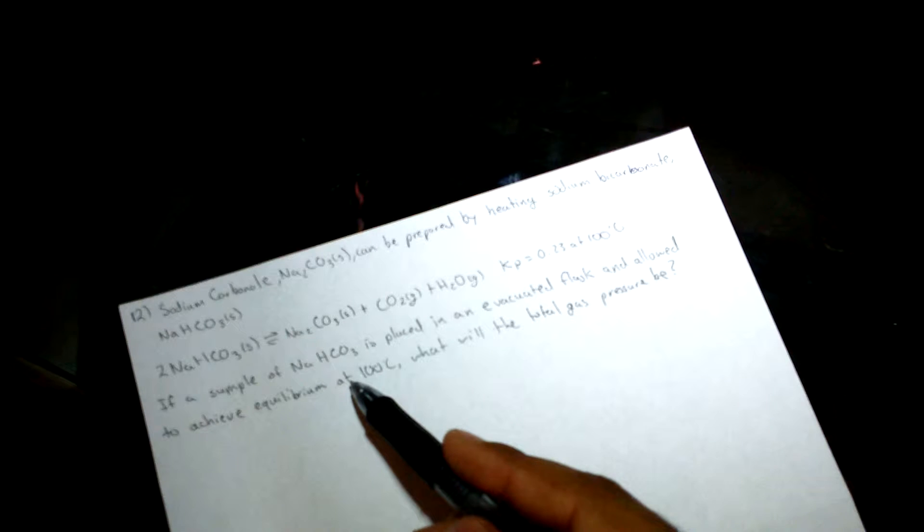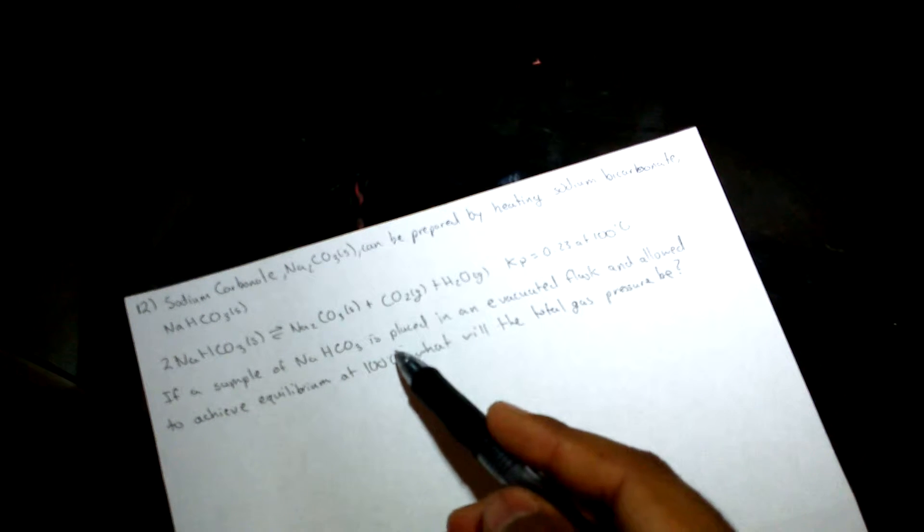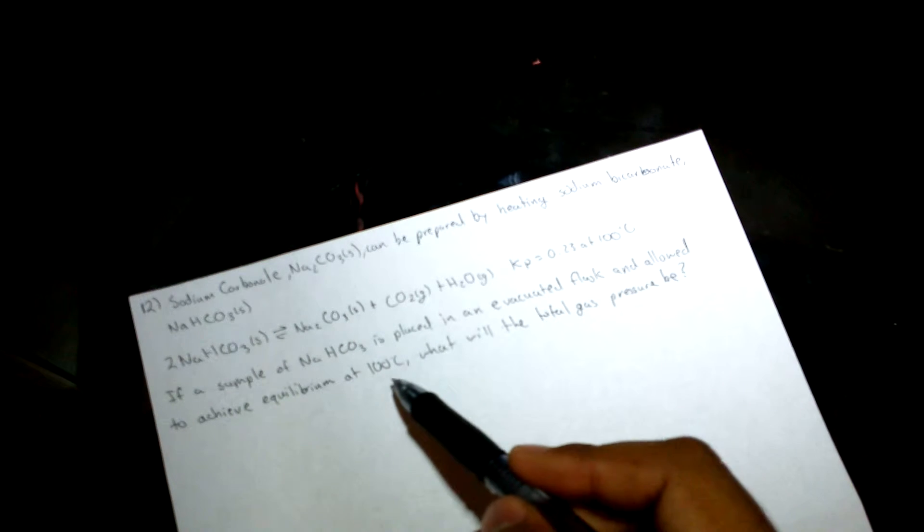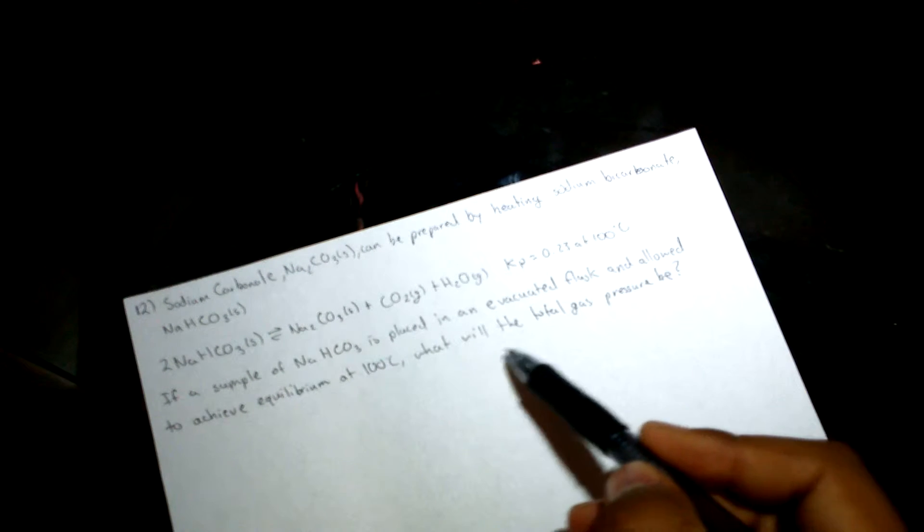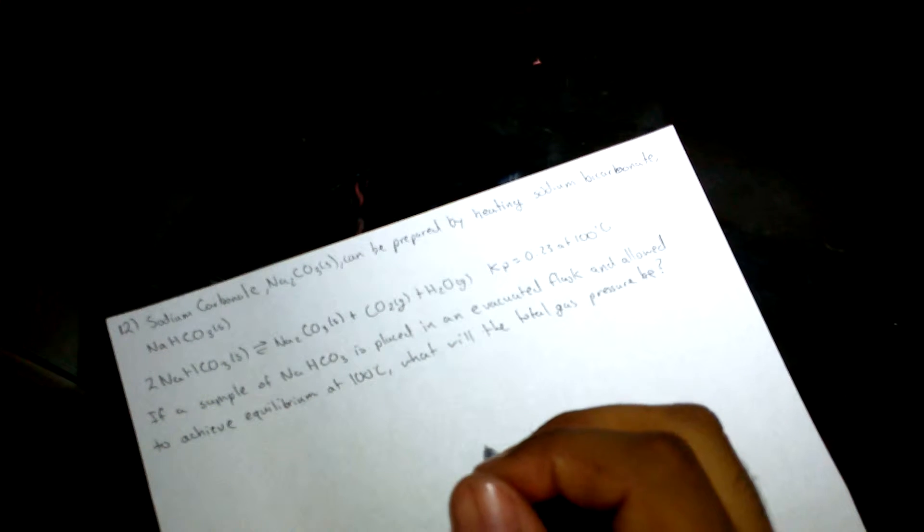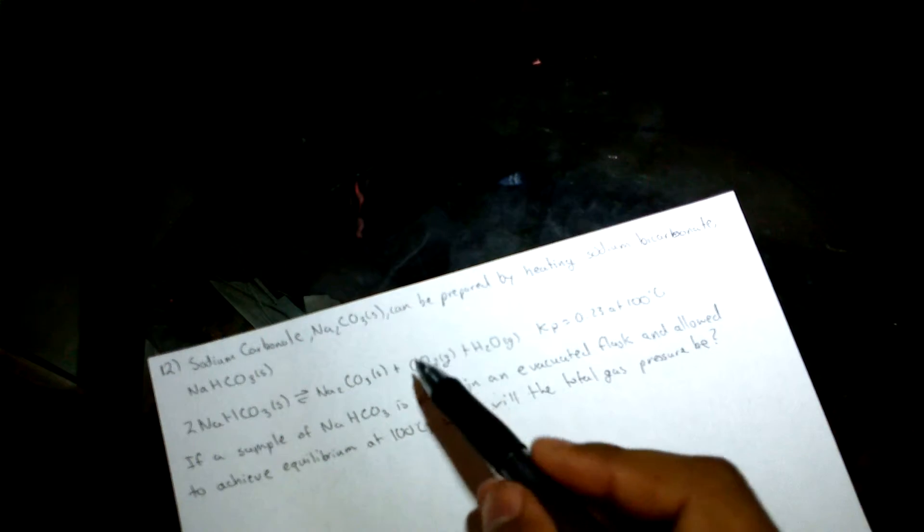If a sample of NaHCO3 is placed in an evacuated flask and allowed to achieve equilibrium at 100 degrees Celsius, what would the total gas pressure be? We can see from the equation that the stoichiometry of CO2 and H2O is one to one.